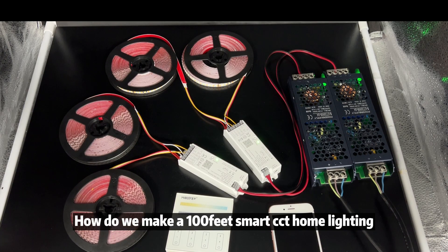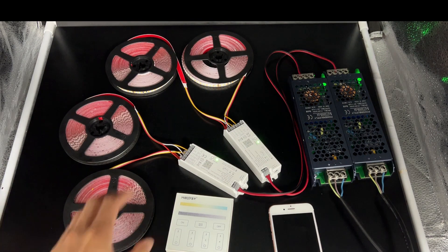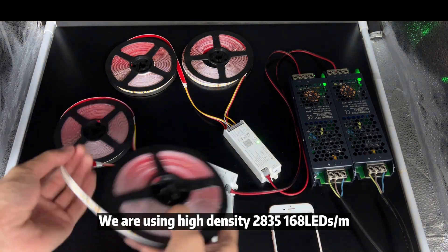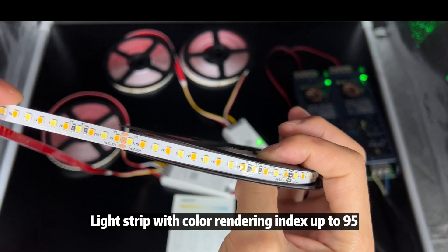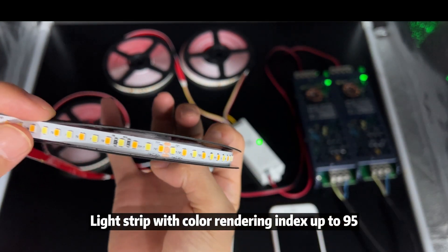Hi everyone, today how do we make a 100 feet smart CCT home lighting? We are using high-density 2835 168 LEDs per meter light strip with color rendering index up to 95.